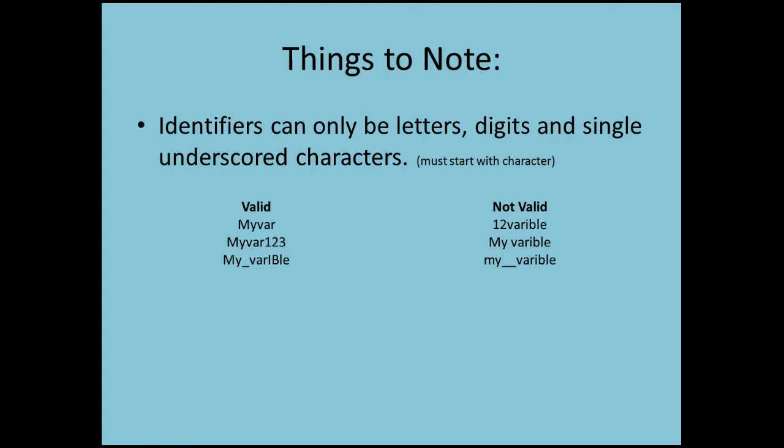Some things to note when declaring a data type: identifiers can only be letters, digits, and single underscore characters. They also must start with a character, so you can't start with a digit, you have to start with a letter. So a valid identifier could be myvar, myvar123, my_variable, things of that nature are valid.